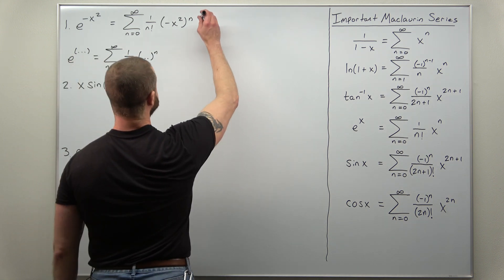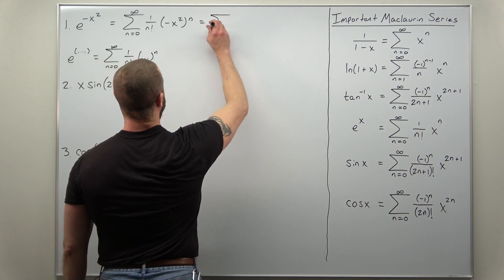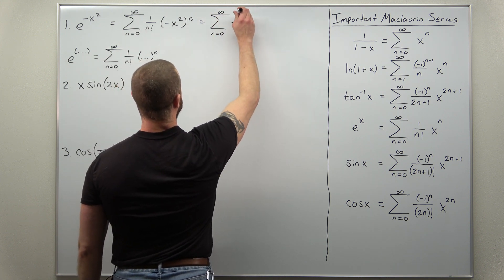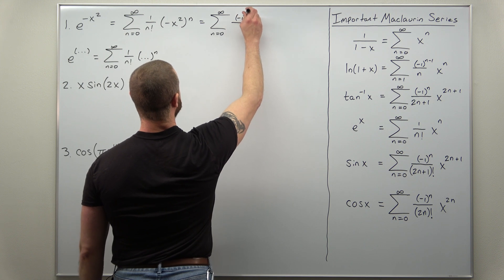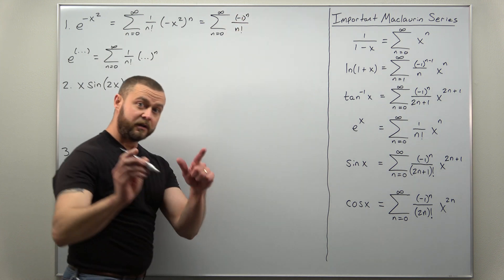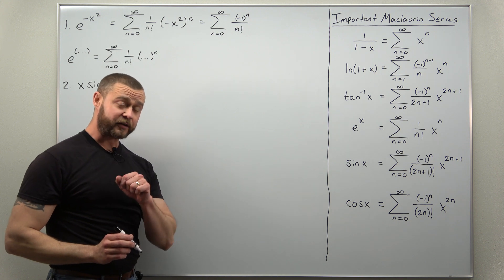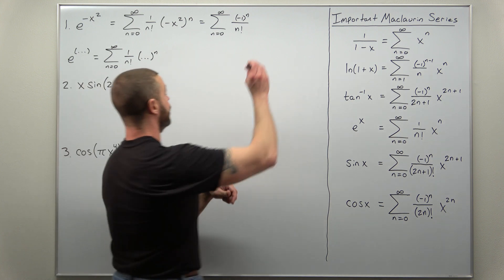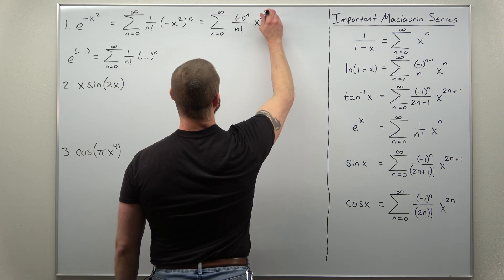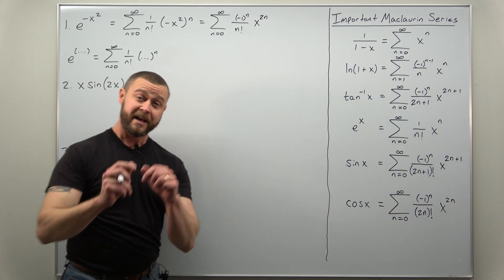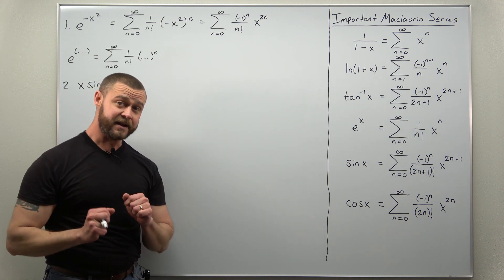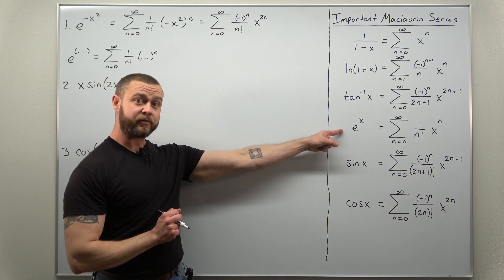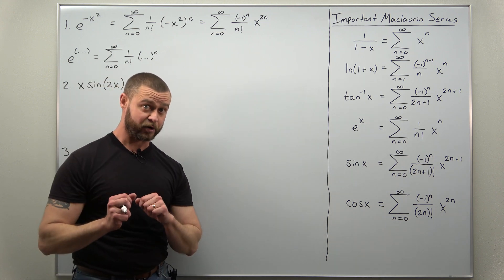We can rewrite this as the sum going from n equals zero to infinity, with negative one to the n in the numerator, n factorial in the denominator, and x to the two n power. That is our Maclaurin series for e to the negative x squared — no derivatives were calculated, we just made an algebraic replacement in an existing Maclaurin series.